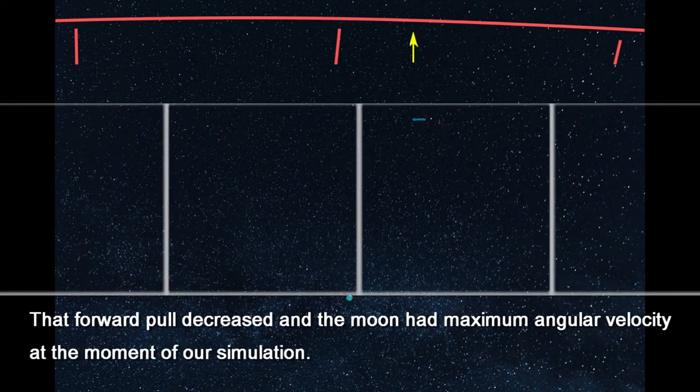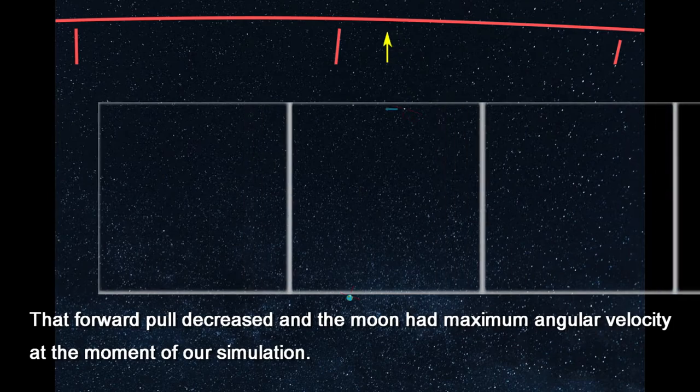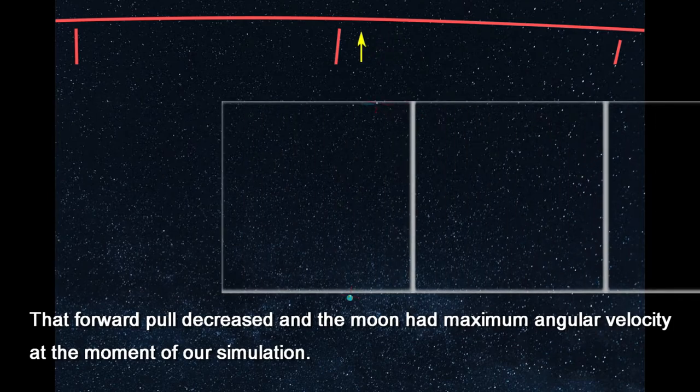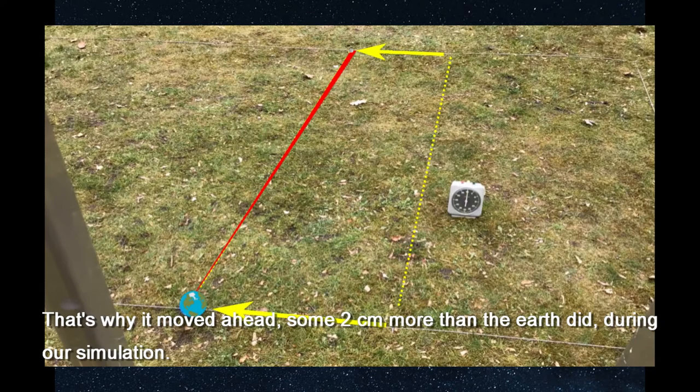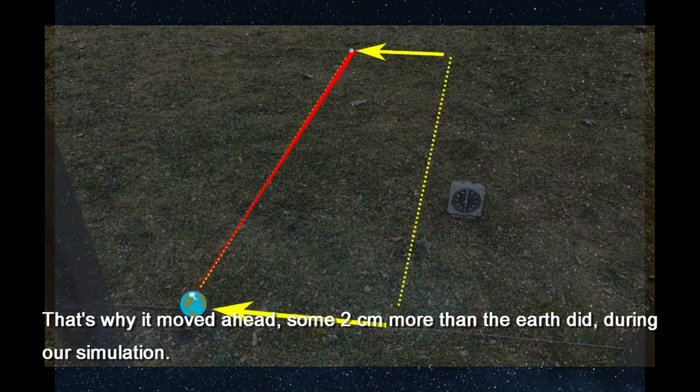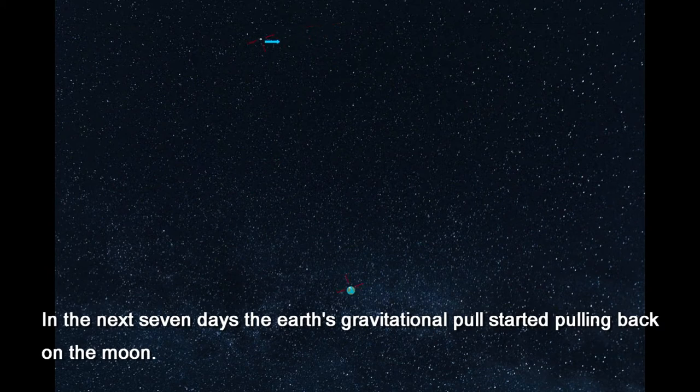That forward pull decreased and the Moon had maximum angular velocity at the moment of our simulation. That's why it moved ahead some two centimeters more than the Earth did during our simulation. In the next seven days, the Earth's gravitational pull started pulling back on the Moon.